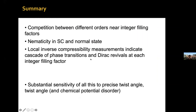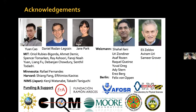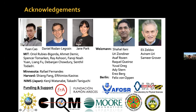So what we have in the phase diagram now is a flavor-symmetry-broken parent state that sets in at temperatures of order 30 Kelvin and above, on top of which the correlated insulating states, superconductivity, nematicity, etc. occur. There is very substantial sensitivity of all this physics to the precise twist angle and to twist angle disorder and chemical potential disorder. I want to acknowledge my collaborators, my student Jonah, Daniel, and Jane, theory collaborators for the nematicity work — a pleasure to collaborate with one of our organizers — and the compressibility studies done together with the Ilani group. Thank you for your attention.